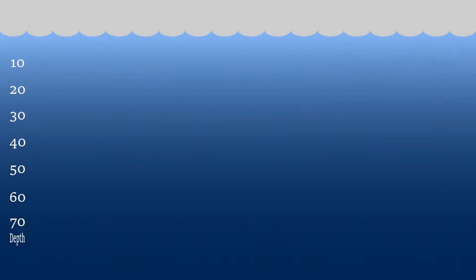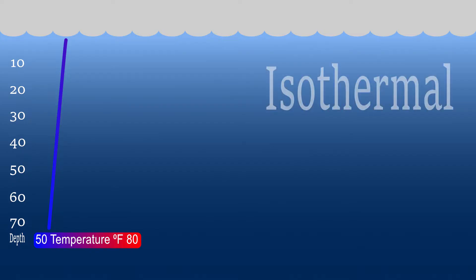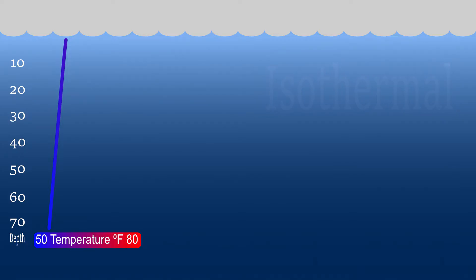During the spring and winter, water in the lake is evenly mixed through the water column. This condition is known as isothermal — the water temperature is similar in all locations in the water column, from the shallows to the deepest parts of the lake.